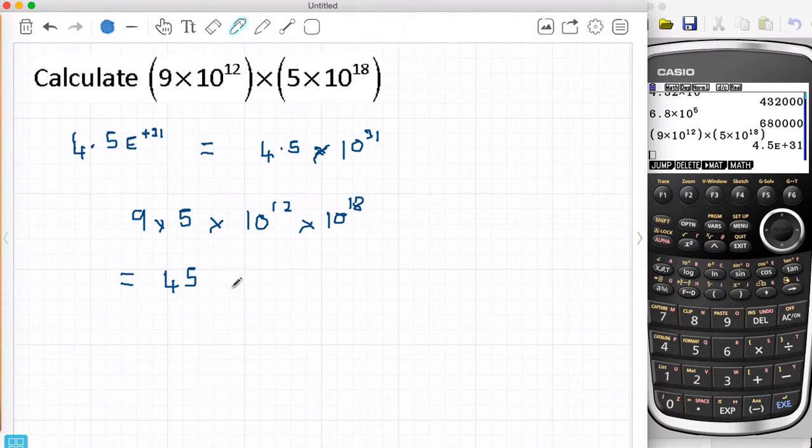And because of the powers, the index laws, the 12 and the 18 get added together to give me 30. Now I could stop here because I've got a number and it's times 10 to the power of something, but I don't want to. So the reason why I don't is because this number here, this isn't actually in standard form, because this is not between 1 and 10.